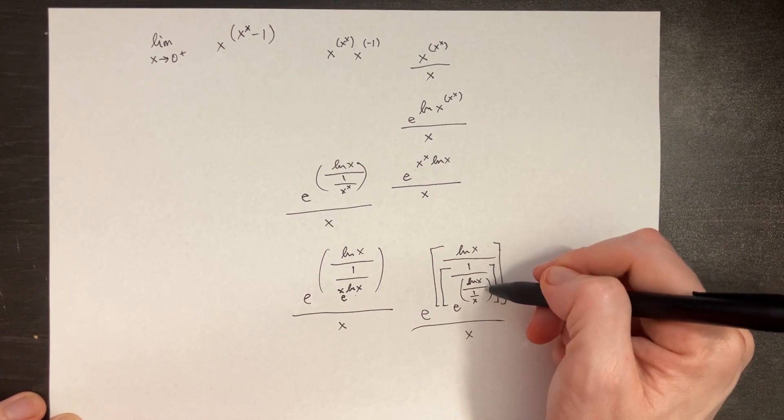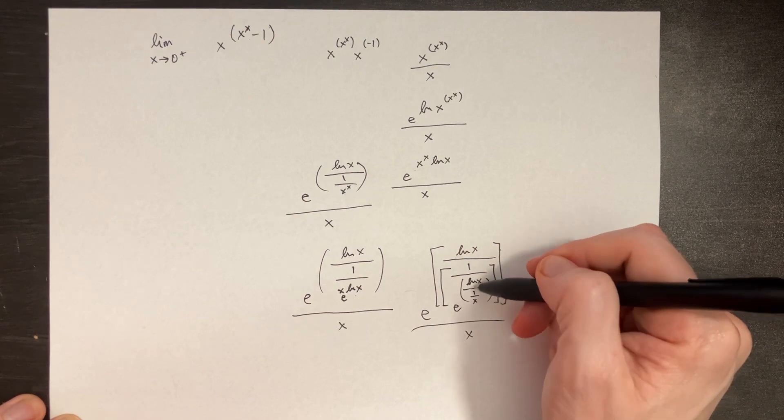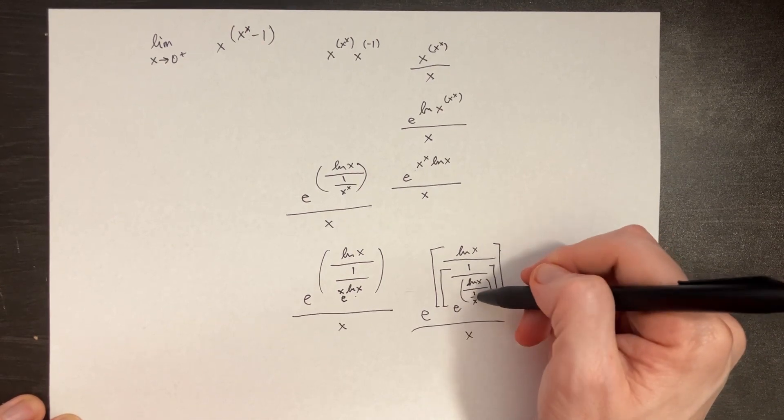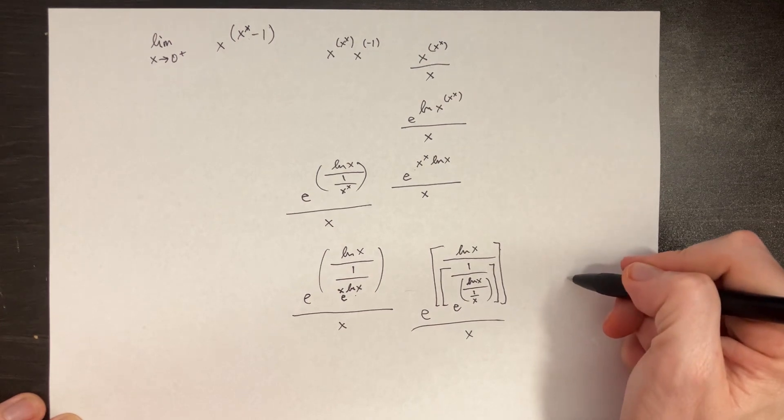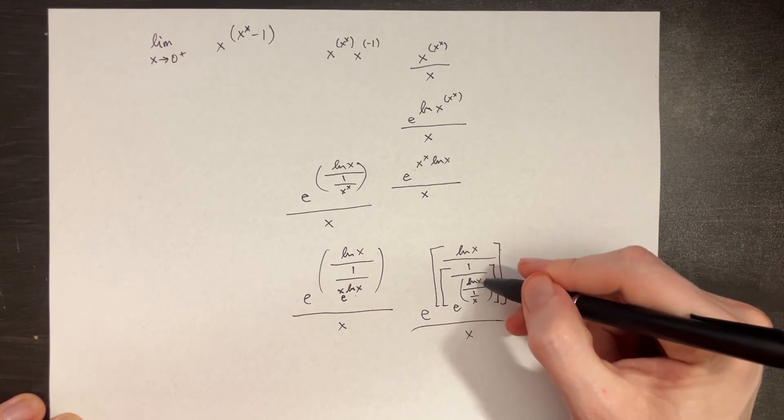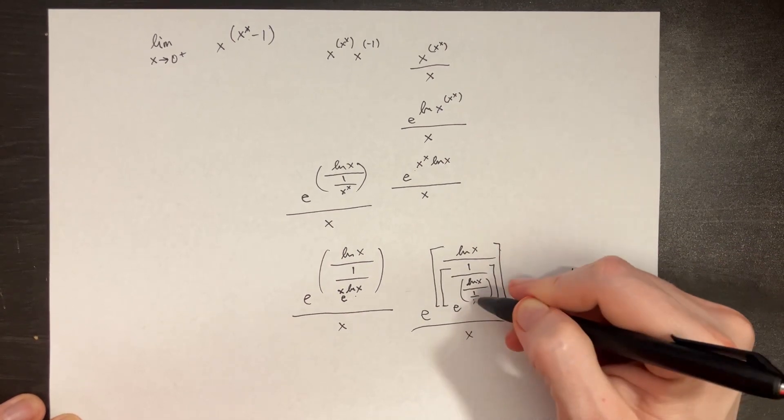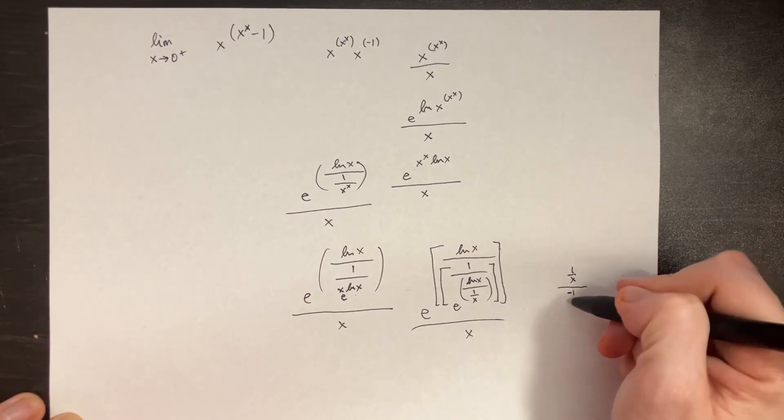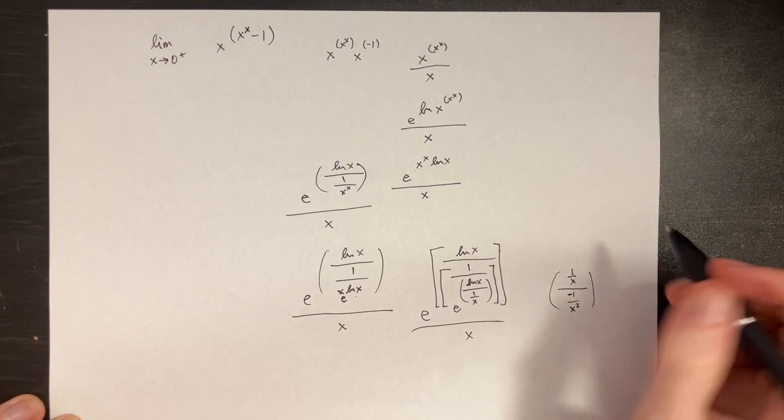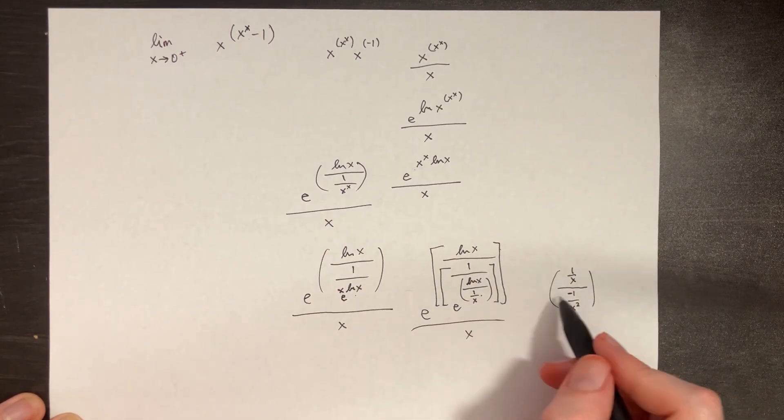So since we have infinity over infinity, we can take the L'Hopital method inside of here, the derivative at the top, the derivative of the bottom. So we're going to say the derivative of ln of x is 1 over x, and then the derivative of the bottom is negative 1 over x squared. I know it looks a little bit crazy, but this is what's inside this parentheses.